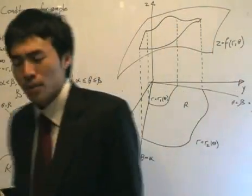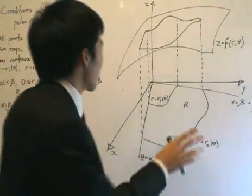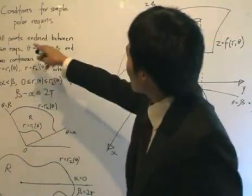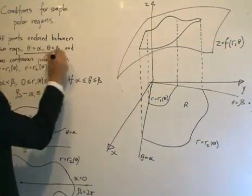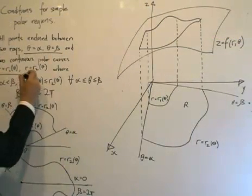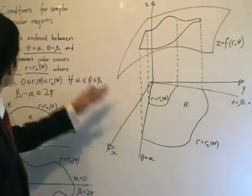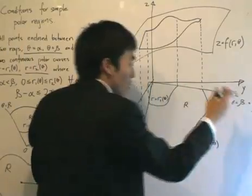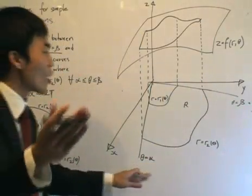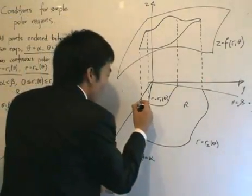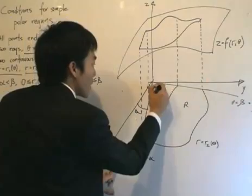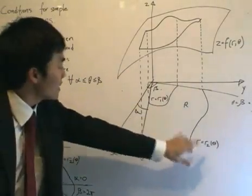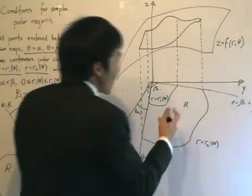Now some preliminaries. We'll start with a simple polar region. The conditions for a simple polar region are: all points enclosed between theta equals alpha and theta equals beta, and between the two continuous polar curves R1(theta) and R2(theta). The angle theta sweeps from alpha to beta via rays from the origin — remember, in polar coordinates we go counterclockwise from the x-axis. We want the points between those two rays as well as between R1(theta) and R2(theta).